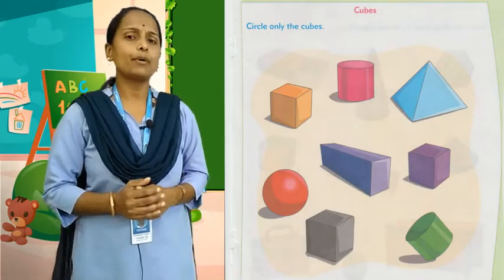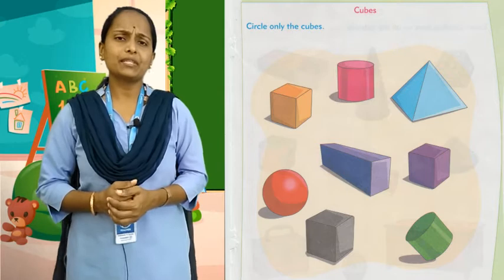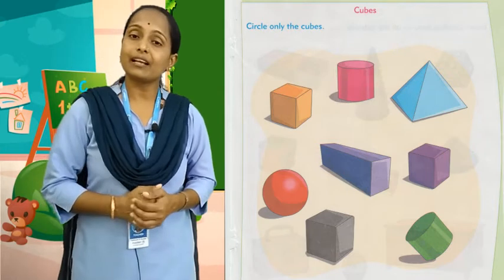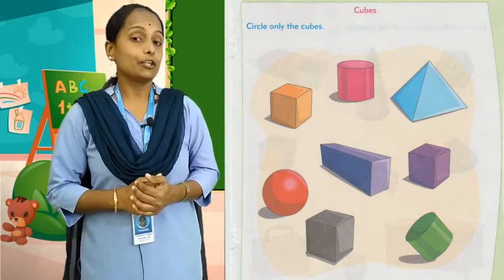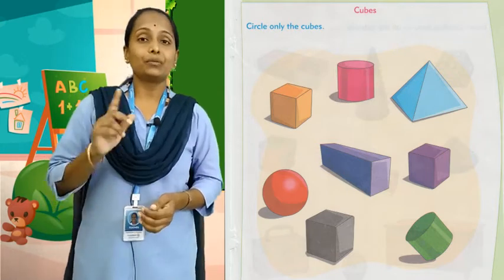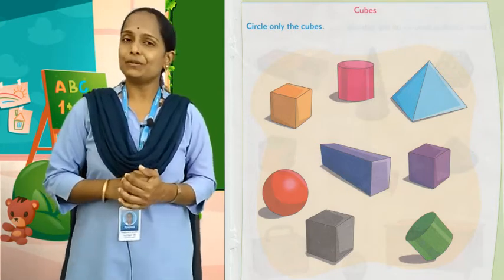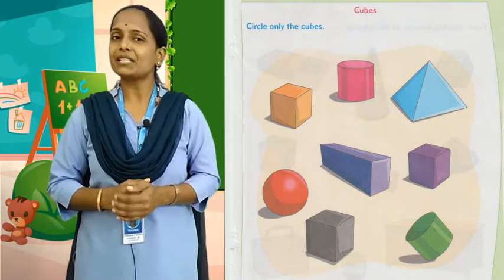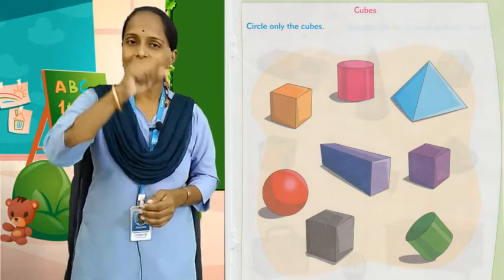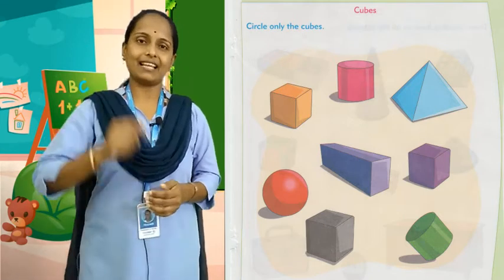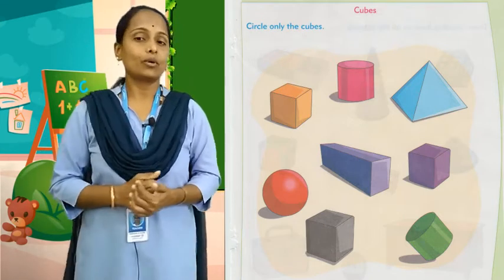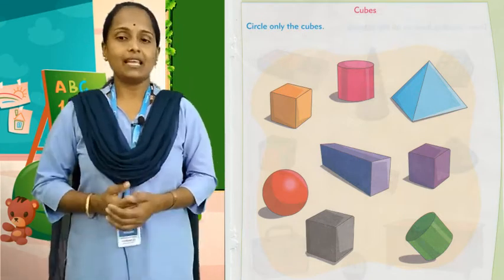155. देखो, वहाँ पर cubes है. आपको क्या करना है? Cubes को guess करके ढूंढना है, और उसे circle करना है. Okay?